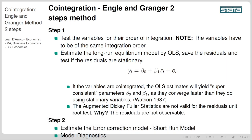In the first step we're going to test the variables for their order of integration. As a note, the variables have to be of the same integration order — if your variable is non-stationary in levels but stationary in first differences, then all variables need to be stationary in first differences. If you have one variable stationary in second differences and another in third differences, that model is not appropriate. You have to ensure all variables are of the same integration order.